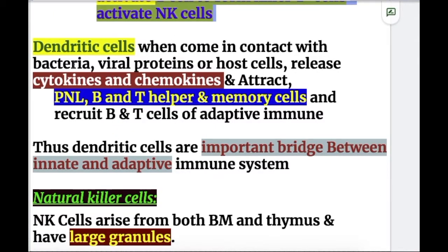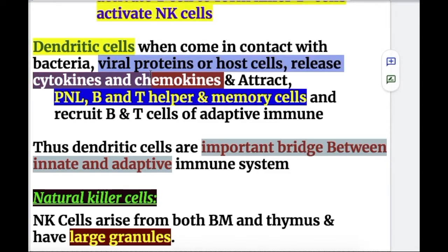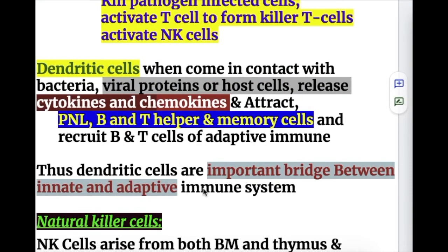When dendritic cells come into contact with bacteria, viruses, or host cells, they release cytokines and chemokines, attract NK cells, and recruit B and T cells of the adaptive immune system. Thus, dendritic cells serve as an important bridge between innate and adaptive immunity.